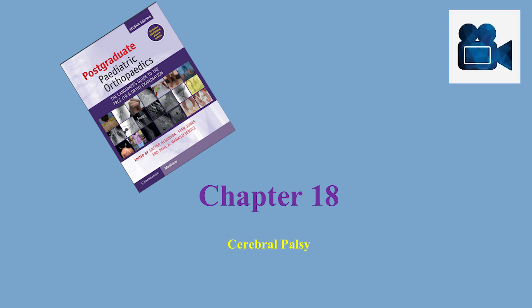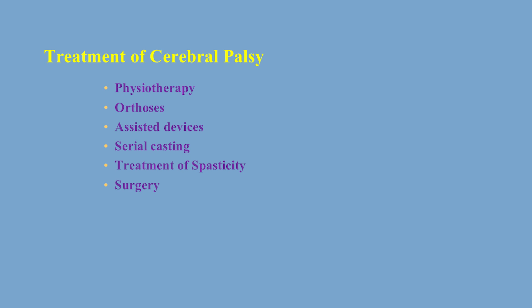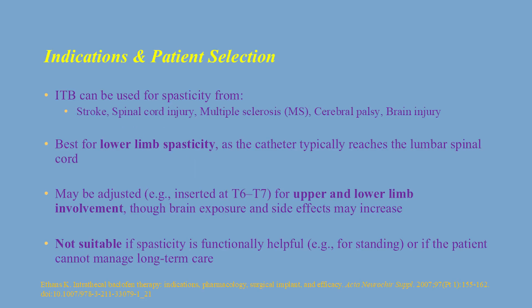Chapter 18 in the postgraduate pediatric orthopedics book talks about cerebral palsy in more detail, and there's a separate video about cerebral palsy which you can watch to gain more understanding about its treatment. The main points covered regarding treatment include physiotherapy, orthosis, assisted devices, serial casting, treatment of spasticity, and surgery. Intrathecal baclofen therapy can be used to treat refractory spasticity in both adults and children — patients diagnosed with stroke, brain injury, multiple sclerosis, or spinal cord injury would benefit, in addition to patients who have cerebral palsy, which is the main focus of this video.